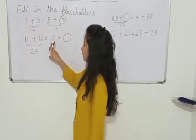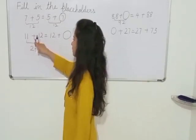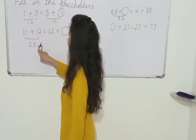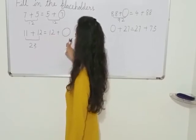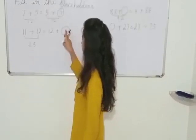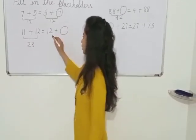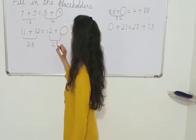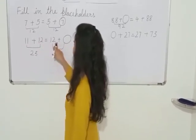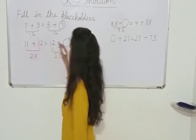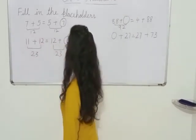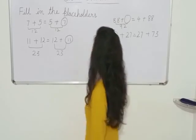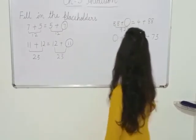Let's take another example. Here is 11 plus 12 equals 23, and here is 12 plus blank. We need the same total of 23. Here is 12, so what is missing? 11. So we will write 11, because 11 plus 12 equals 23.